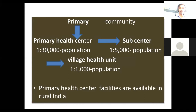Primary is community-based and has three sections: a primary health care center for 30,000 population, a sub-center for 5,000 population, and a village health unit for 1,000 population. So primary health care facilities are available in rural India.